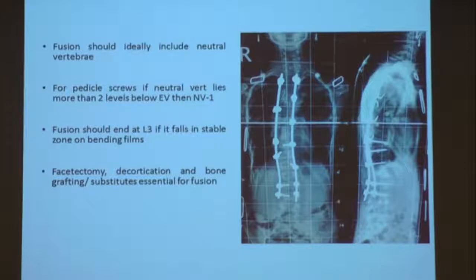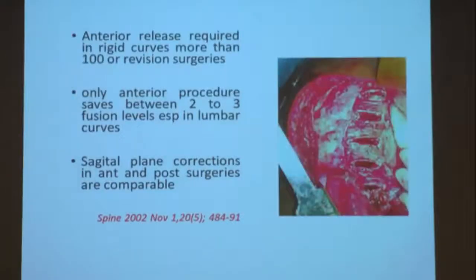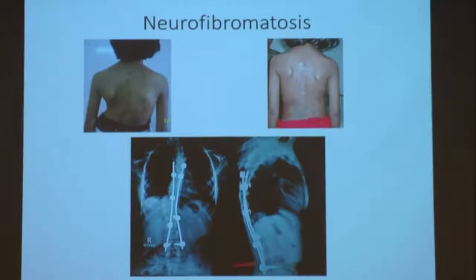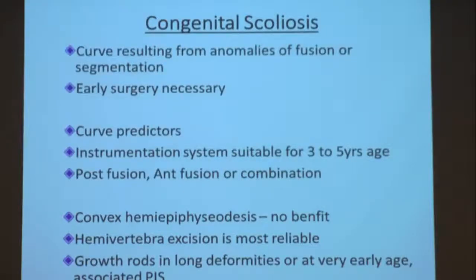Intraoperatively, for curves more than 100 degrees, do anterior surgery first — multiple discectomy, internal osteotomy — make it mobile, then turn over and do posterior fixation. Anterior surgery has more chances of morbidity and mortality. Neurofibromatosis type 1 and type 2 curves — patients may have café-au-lait spots, axillary freckling, rib pencilling, dural ectasia, osteopenia — these require anterior fusion as well. Anterior surgery is becoming rarer; we do it only in certain specific cases.